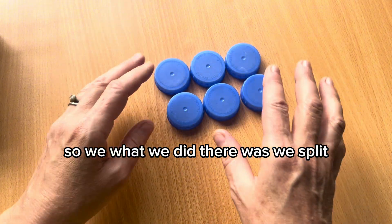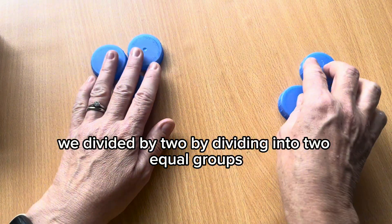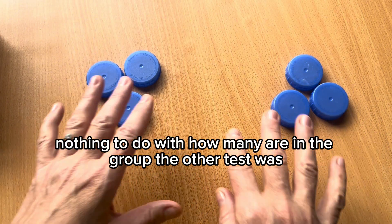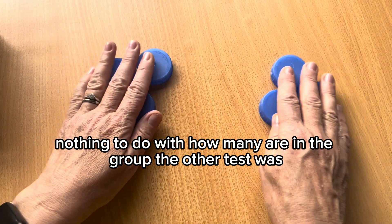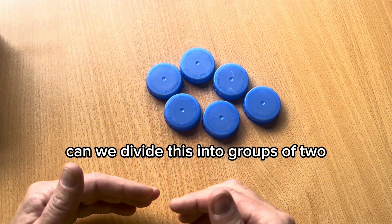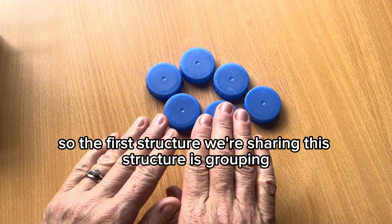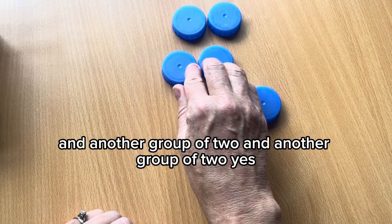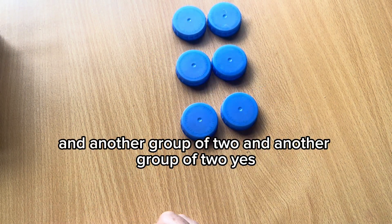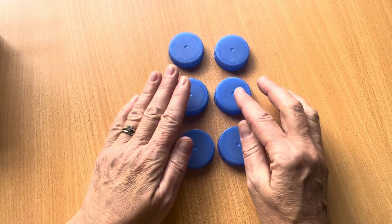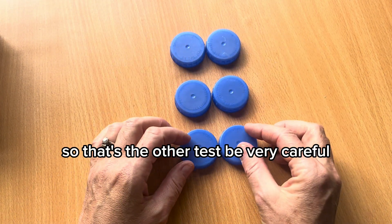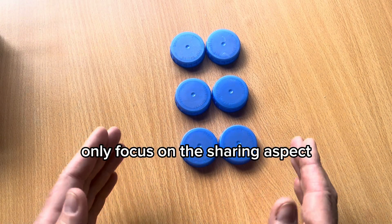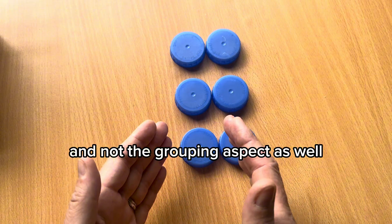So what we did there was we split, we divided by two by dividing into two equal groups. The two-ness is the number of groups, nothing to do with how many are in the group. The other test was, can we divide this into groups of two? So the first structure was sharing. This structure is grouping. So I'm going to create a group of two and another group of two and another group of two. Yes, it can. Hope you can see that moving down a bit. So that's the other test. Be very careful because too many practitioners working with young children only focus on the sharing aspect and not the grouping aspect as well.